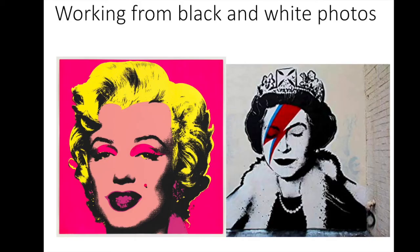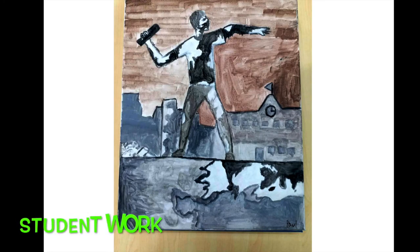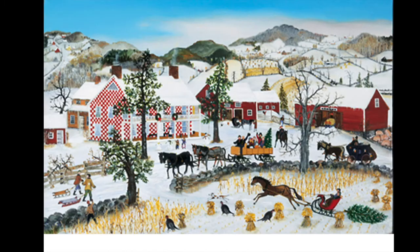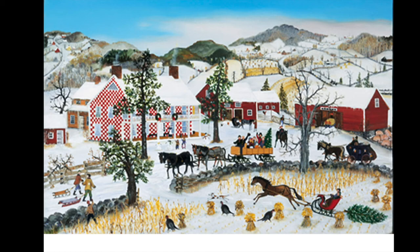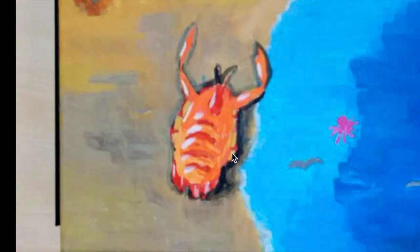A lot of artists are famous for working from black and white photos — that is another thing you can do, taking your photos and going into Photoshop or whatever program and changing the color around or making them black and white. Banksy and Andy Warhol are famous for working with photographs as well. There's one inspired by Banksy. There's also Grandma Moses — these big pastoral scenes with little tiny people in a landscape. There's a student example with little tiny people in a landscape and a giant crab. I don't remember why, but it's a great giant crab.